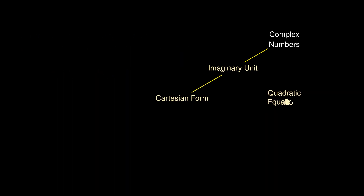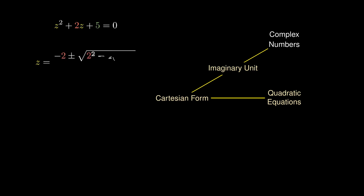Consider the quadratic equation z² + 2z + 5 = 0. To solve this, we simply apply the quadratic formula. The expression inside the square root is a negative number. When working with real numbers, there is no number whose square is negative.